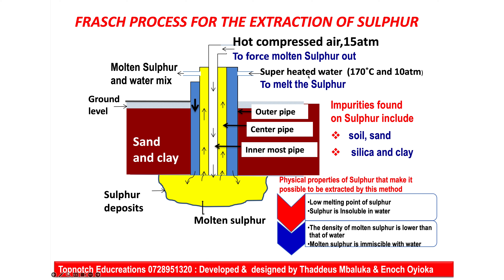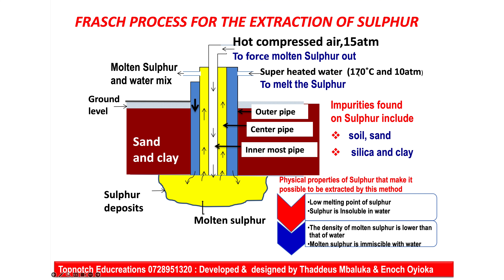In the outermost pipe, we put superheated water at 170 degrees Celsius and 10 atmospheres pressure. The role of the superheated water is to melt the sulfur. The high temperature ensures it is above the melting point of sulfur, and the high pressure of 10 atmospheres is to make sure that water remains liquid even at very high temperature above its boiling point. An examiner can ask you: how is water maintained in liquid state even at 170 degrees Celsius? This is because of the high pressure of 10 atmospheres.